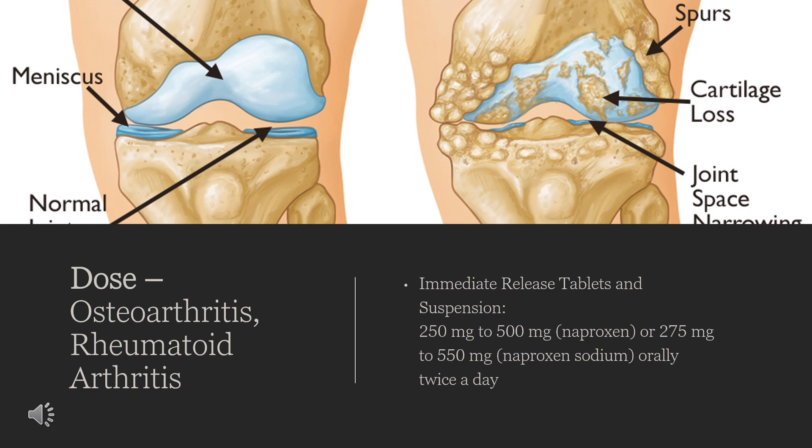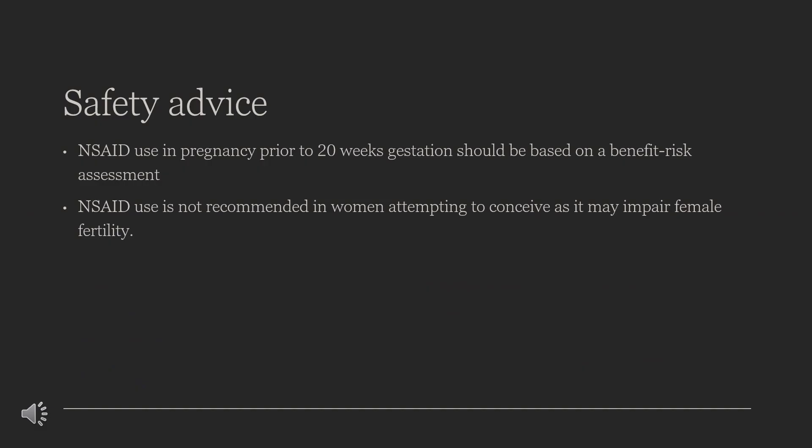NSAID use in pregnancy prior to 20 weeks gestation should be based on a benefit-risk assessment, with many authorities recommending avoidance throughout pregnancy whenever possible. If necessary between 20 and 30 weeks, limit use to the lowest effective dose for the shortest duration, and consider ultrasound monitoring of amniotic fluid. If oligohydramnios occurs, discontinue the NSAID. NSAID use is not recommended in women attempting to conceive as it may impair female fertility.